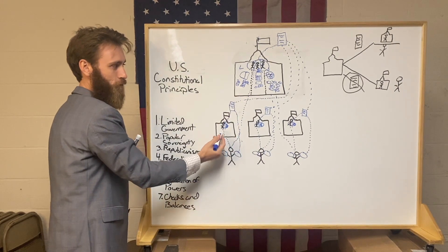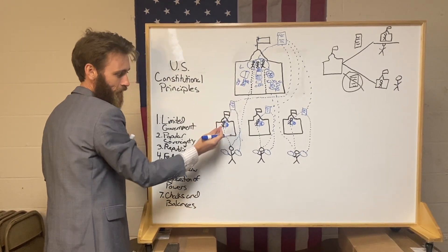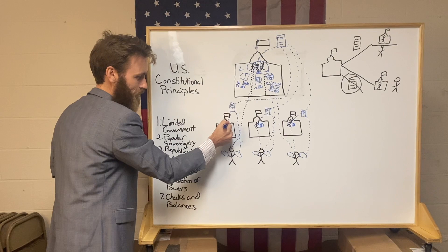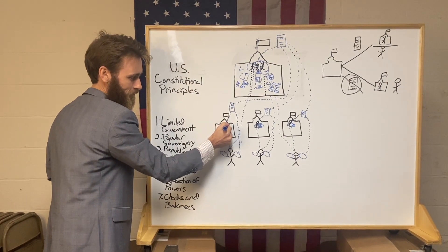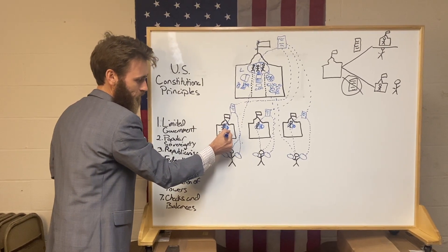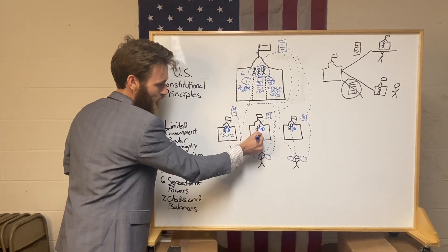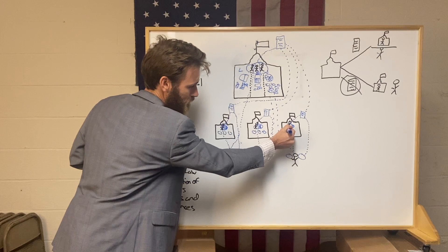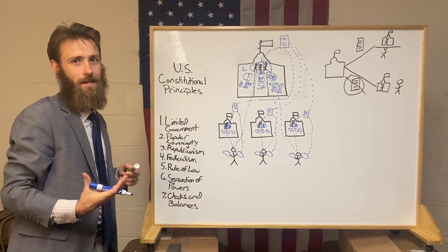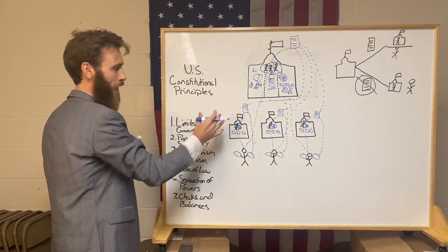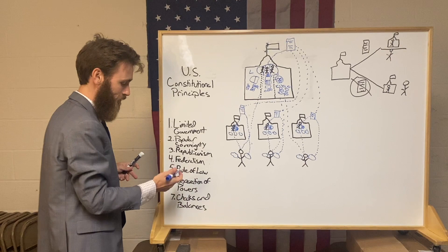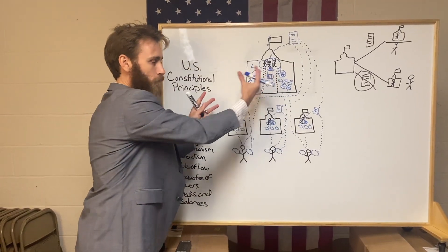Every state government — which is supposed to be more powerful than the federal government in many ways — has three branches as well, with two houses of Congress, a state Supreme Court, and state executives. The power is separated there too. The founders made a conscious decision to separate the powers rather than keep them concentrated together.